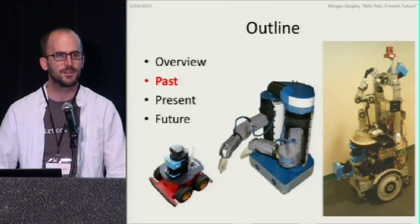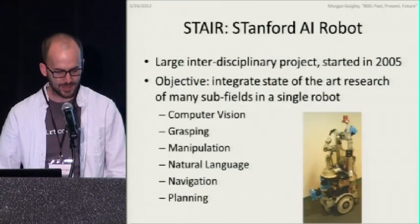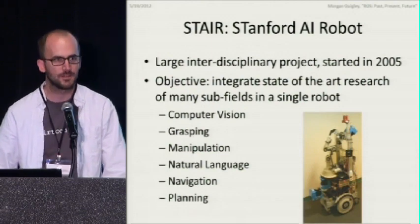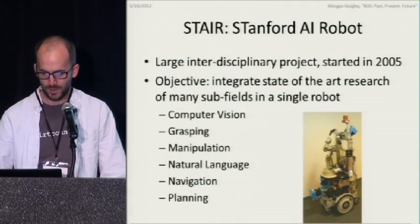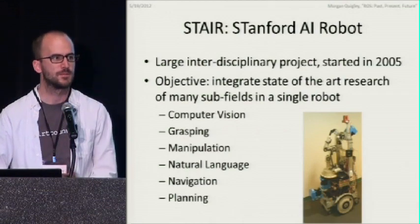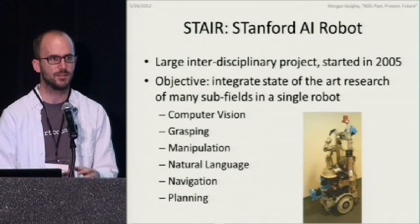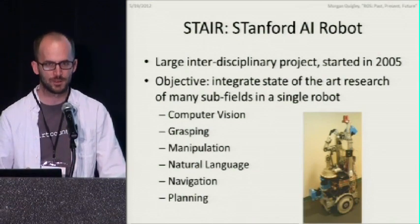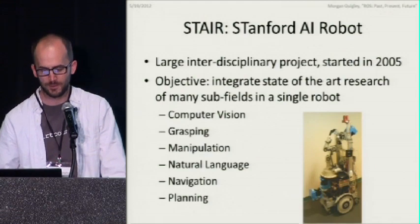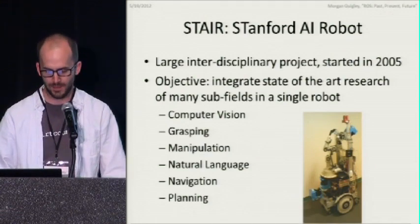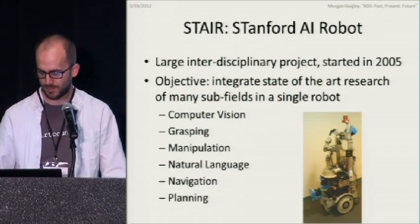I started working on this with the STAIR project — the Stanford AI Robot — a big interdisciplinary project at Stanford started in 2005, about the same time I got there. What we wanted to do was integrate lots of state-of-the-art research onto the same platform. Often in robotics, everyone works on their own piece of a large problem and stays in their own silo. Instead, we wanted to force everybody — no matter how much grumbling — to crush all these sub-projects onto the same robot, learning things in the process that we wouldn't learn if we were only doing computer vision with a camera on a desk.